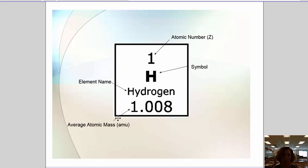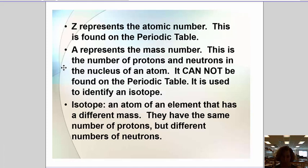The element name. Now this down here is what we call the average atomic mass. That is not the same as mass number that we're going to see in a minute. So average atomic mass is what's given on the periodic table. Pause and jot these things down.